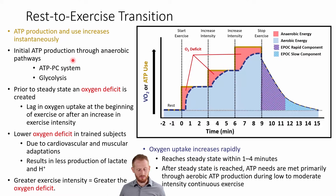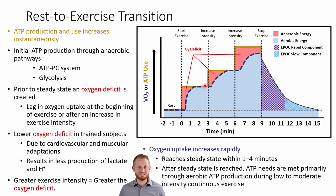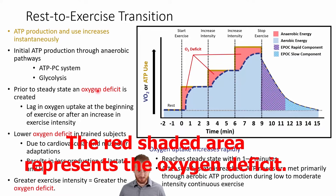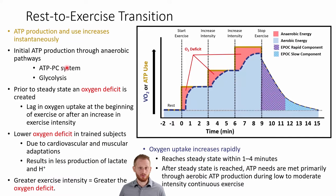Notice that when we go from rest — where we use almost entirely aerobic energy — and start to exercise, there's a period shown by the red shaded area of anaerobic energy produced. Then eventually the aerobic line curves up and catches up to meet the needs of that exercise intensity. Before it does that, before we can produce the energy aerobically, we have to produce it anaerobically. While we're in oxygen deficit, we're using the ATP-phosphocreatine system and glycolysis.